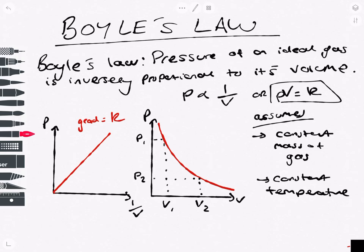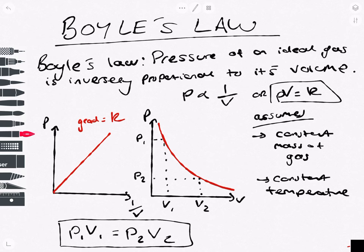This leads us to the second equation of Boyle's Law, which is P1V1 equals P2V2. This means if you change the pressure, you're going to change the volume. If you increase the pressure, you're going to decrease the volume. If you decrease the pressure, you're going to increase the volume. And that's Boyle's Law.